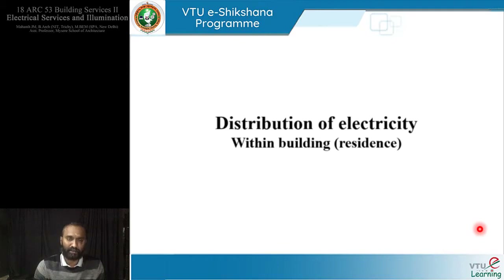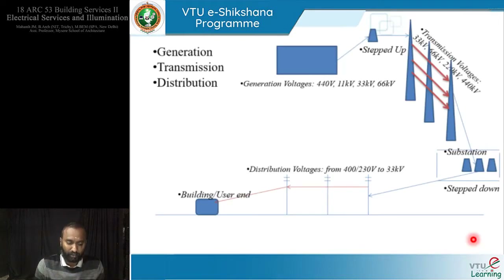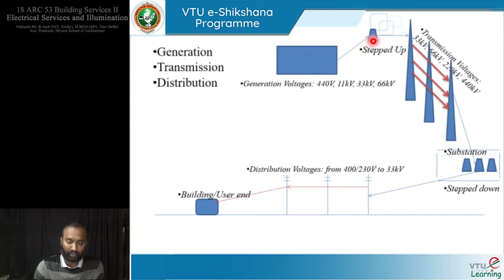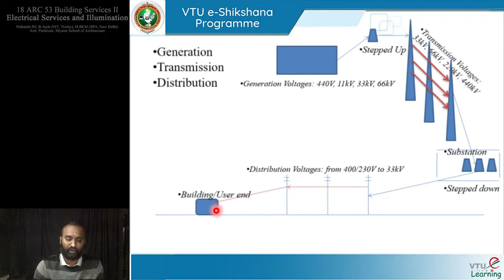After it reaches our building — because we spoke about electricity reaching the government metering panel — what happens after that is what we are going to know in this module. We spoke about generation, transmission, and distribution, and we know about the voltages in which it is generated, transmitted, and distributed. It got generated, stepped up, transmitted through transmission voltages and towers, through several substations, reaches the lamp poles in front of our houses, and finally reaches our compound, our building, our premises. The government stops with the installation of a metering device through which we will be charged.